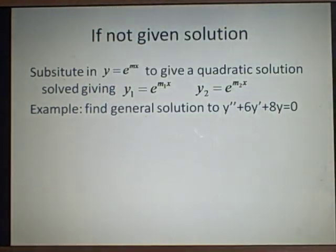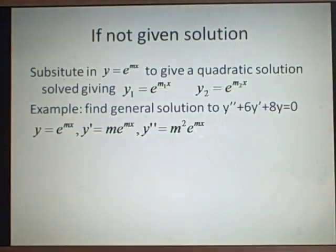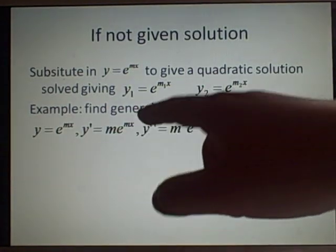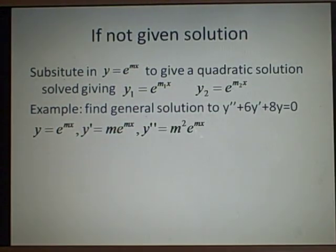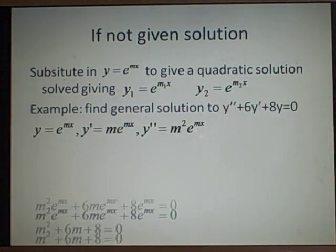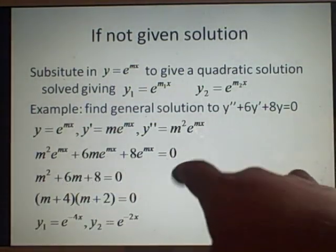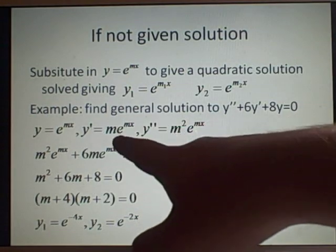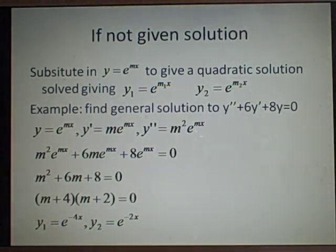Like I said, we put this y in. If we differentiate this once, we'll get me^(mx), differentiate it again, we'll get m²e^(mx). Now all we do is we substitute everything into here, and it will give you this. Now we can see, because it's homogeneous, which is the only one we're working with today, we can cancel all the e to the mx's.